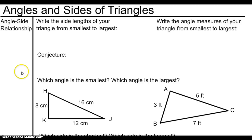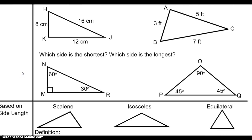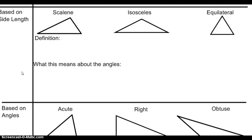Before we start at the top, we're actually going to scroll down a little bit and take a look at the different kinds of triangles before we talk about their angles. There are two ways to talk about triangles: we can either talk about them based on their side length, or we can talk about them based on angles. So first, let's talk about triangles based on side length — how long the sides are.